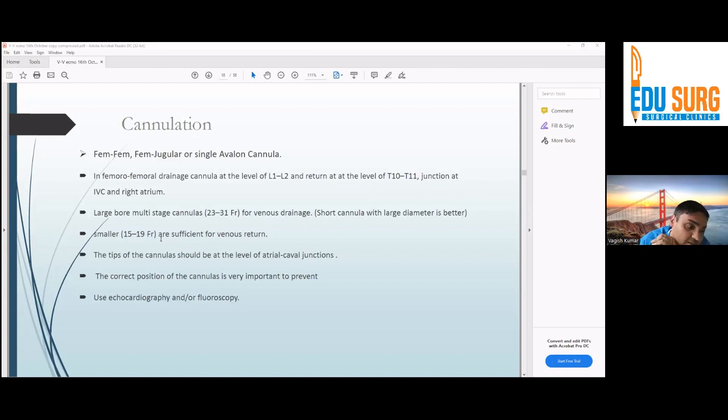When we insert a drainage cannula, drainage cannulas are most of the time multistage cannulas. Multistage means there are multiple holes, orifices, in the multistage cannula. It's just to increase the ECMO blood flow so that they can suck out blood from everywhere. But in practice, when there was a study and they saw it on MRI as well, it's the proximal port which is the most important port in the drainage of blood. That's why even when a patient's cannulas are very near, still patient doesn't recirculate. Most of the blood is coming through the proximal port.